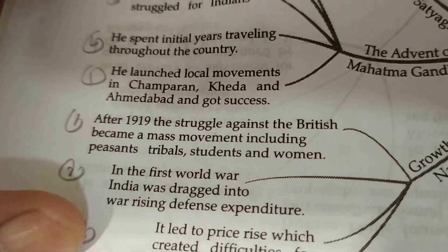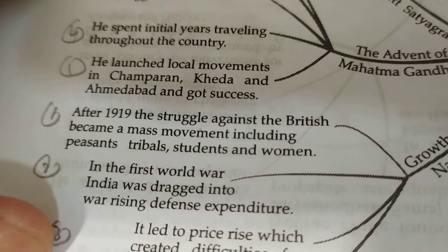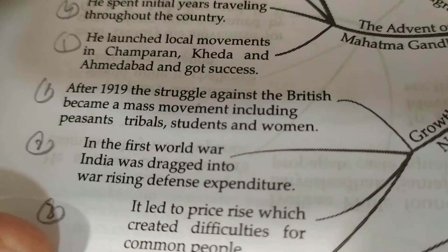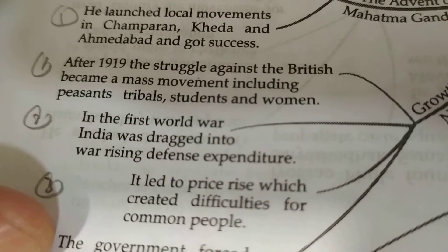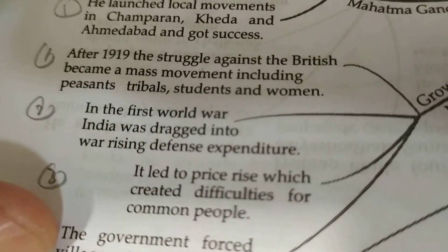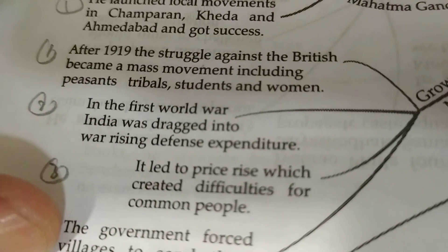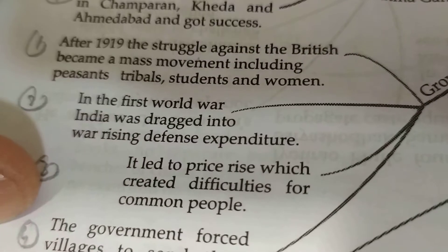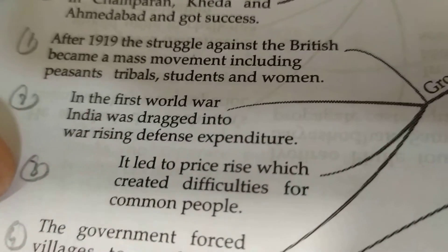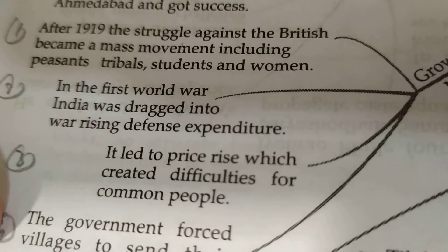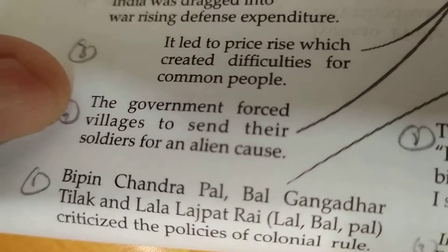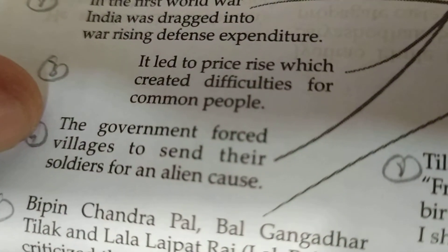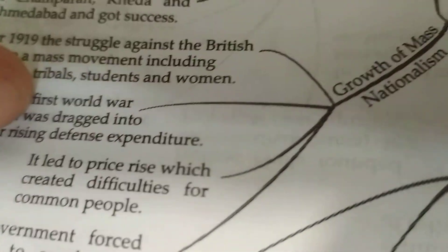Then, the growth of mass nationalism. After 1919, the struggle against the British became a mass movement, including peasant and tribal student movements. In the First World War, India was dragged into the war, raising defense expenditure. This led to price rise, which created difficulties for common people. The government forced villagers to send their sons as soldiers for an alien cause.